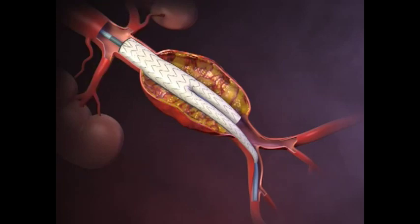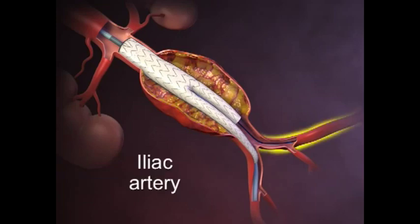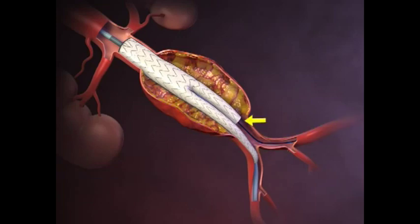A second guide wire is introduced through the contralateral iliac artery into the open lumen of the contralateral limb of the stent graft. The top cap is removed, deploying the suprarenal stent and anchoring the stent graft to the vessel wall.